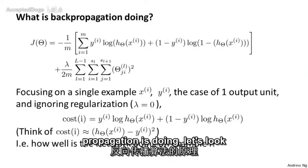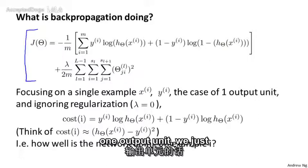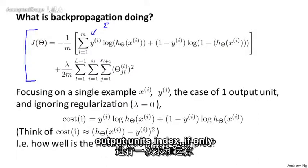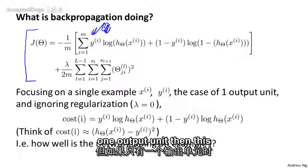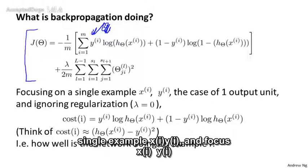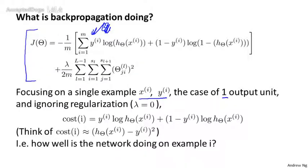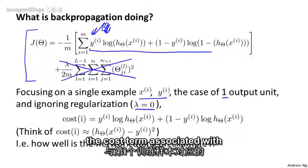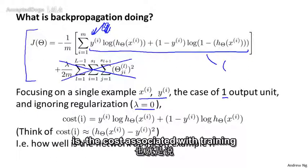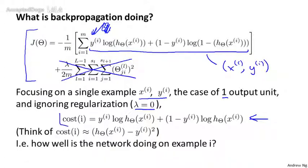To better understand what backpropagation is doing, let's look at the cost function. Here's the cost function for when we have only one output unit. If we have more than one output unit, we'd have a summation over the output units indexed by k. We do forward propagation and backpropagation on one example at a time, so let's focus on a single example xi, yi, with one output unit, where yi is just a real number, and let's ignore regularization, so lambda equals zero. The cost term associated with the i-th training example is given by this expression.